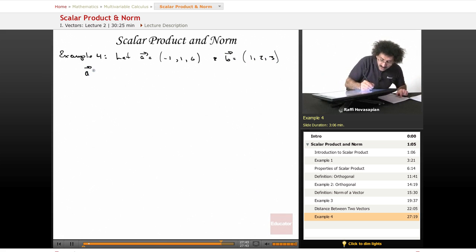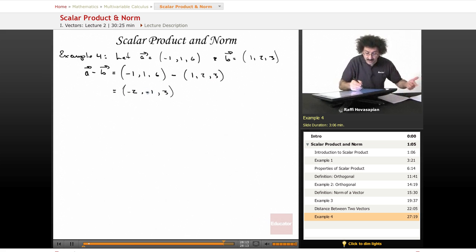Okay, the vector A minus B is equal to, I'm going to write all of this out explicitly so you see it, (-1, 1, 6) minus the vector (1, 2, 3). Well, that equals (-1 minus 1, 1 minus 2, 6 minus 3), which is (-2, -1, 3). That gives us the vector (-2, -1, 3).